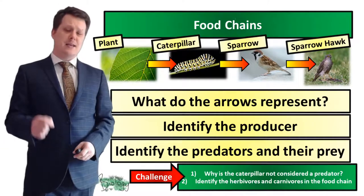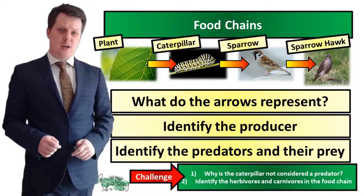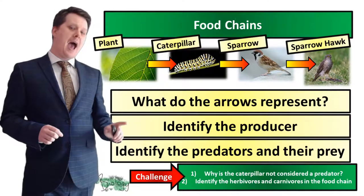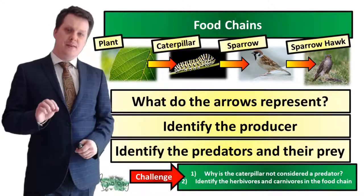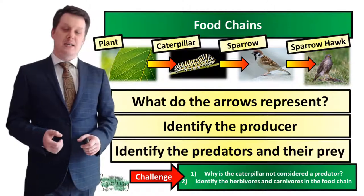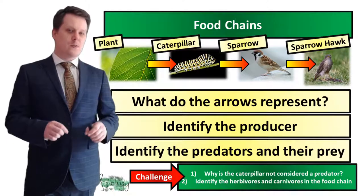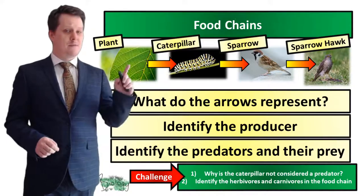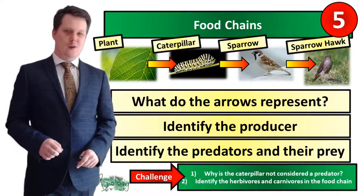For your first task, answer the following questions: What do the arrows in this food chain represent? Identify the producer. Identify the predators in this food chain and their prey. For a challenge, explain why the caterpillar is not considered a predator, and identify the herbivores and carnivores. Pause the video if you need more time.